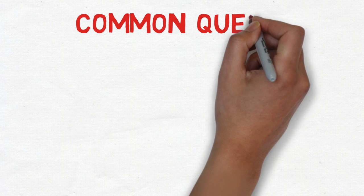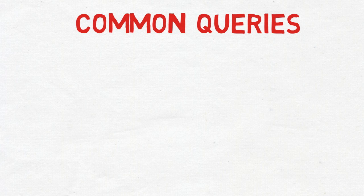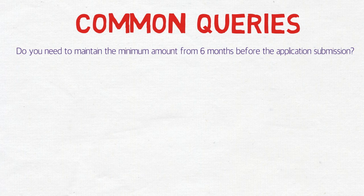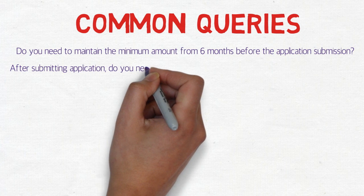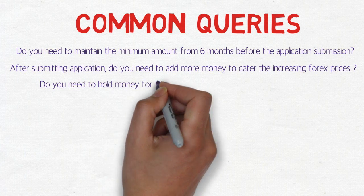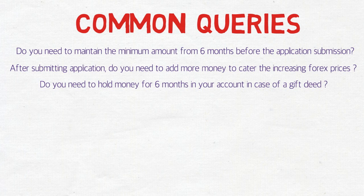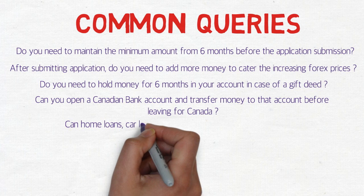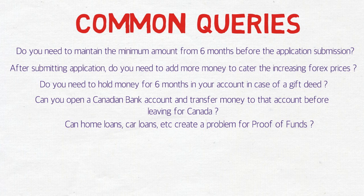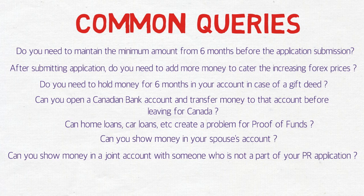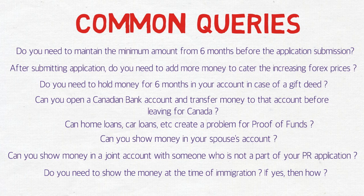Now let's begin. I've listed all the common queries and I'll be answering them one by one. The questions are: Do you need to maintain the minimum amount from six months before application submission? After submitting the application, do you need to add more money to cater for increasing foreign exchange prices? Do you need to hold money for six months in your account in case of a gift deed? Can you open a Canadian bank account and transfer money before leaving for Canada? Can home loans, car loans, or personal loans create a problem for proof of funds? Can you show money in your spouse's account? Can you show money in a joint account with someone who is not part of your PR application? And do you need to show the money at the time of immigration?